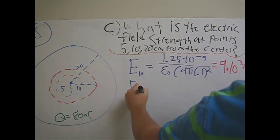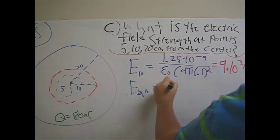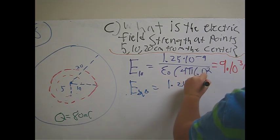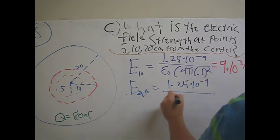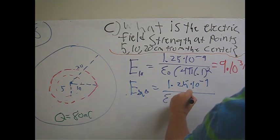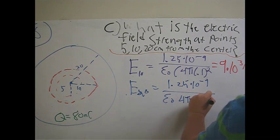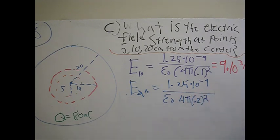And then do the same thing for the electric field at 20, which equals 1.8 times 10³ newtons per coulomb, and there you have it.